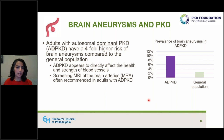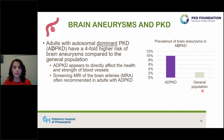In adults with autosomal dominant PKD, there is a fourfold higher risk of brain aneurysms compared to the general population, and that risk is higher if previous generations in the family also had aneurysms. In the general adult population, the prevalence of brain aneurysms is 2 to 3%, whereas in AD PKD it is between 8 and 12%. There are recommendations about screening for brain aneurysms in people with AD PKD depending on various criteria.